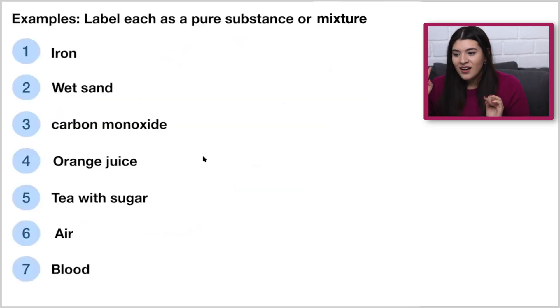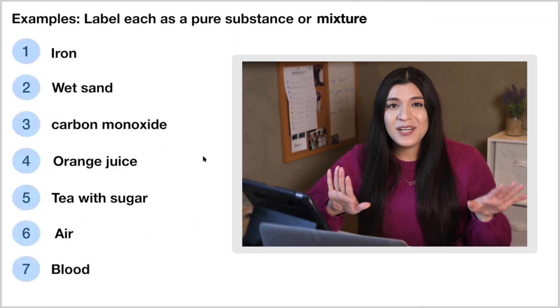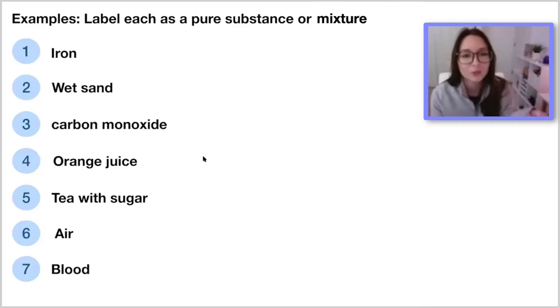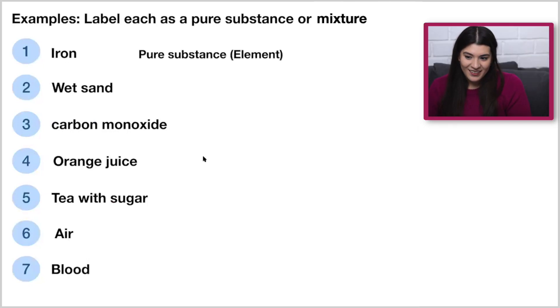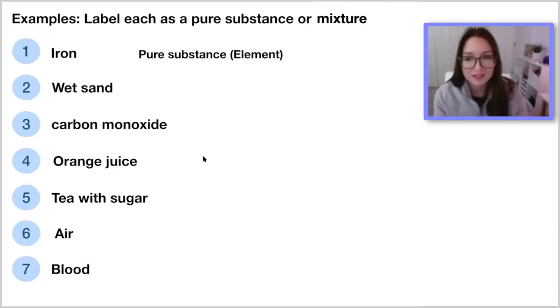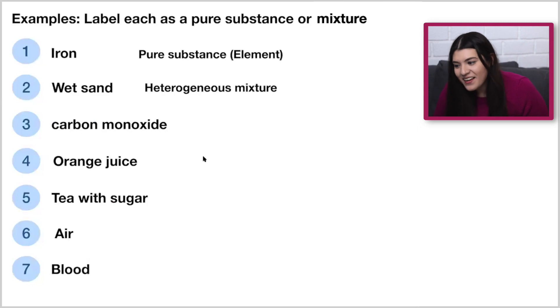So just as a practice run, go ahead and tell me what you think each one of these are. Label them either pure substance or mixture, and specifically what type of pure substance and what type of mixture. Try these questions out on your own and don't worry, we'll go over the answers together. So iron would be a pure substance, it would be an element. Correct, good, you're right. Wet sand would be a mixture, and it would be heterogeneous? Yes, it would, exactly good.